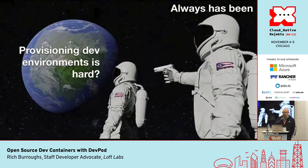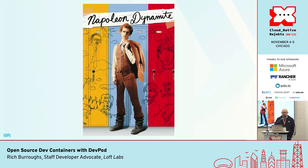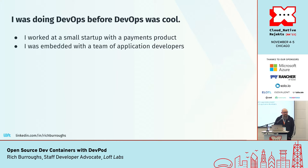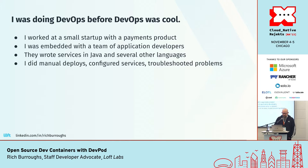Provisioning dev environments is a hard problem and it has been since the beginning of time. To illustrate this, I want to time travel back to 2004 — the year Napoleon Dynamite came out. I was doing DevOps back then before there was really even a word for it. I worked at a small startup with a payments product, embedded with a team of application developers who wrote services in Java and several other languages.